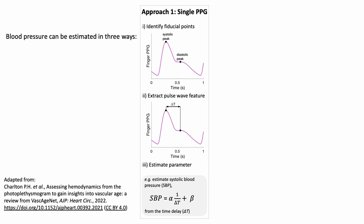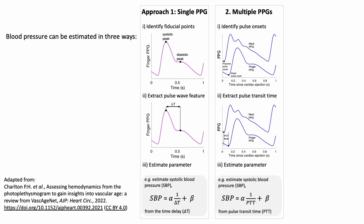Blood pressure. Blood pressure can be estimated in three ways from the PPG. Firstly by using a single PPG pulse wave. Here again we identify fiducial points, extract a pulse wave feature, and then estimate blood pressure from this feature using a model to convert the feature to a blood pressure. Secondly we could have multiple PPG signals, one closer to the heart and one further away, and measure the pulse transit time between these signals and estimate blood pressure from that.